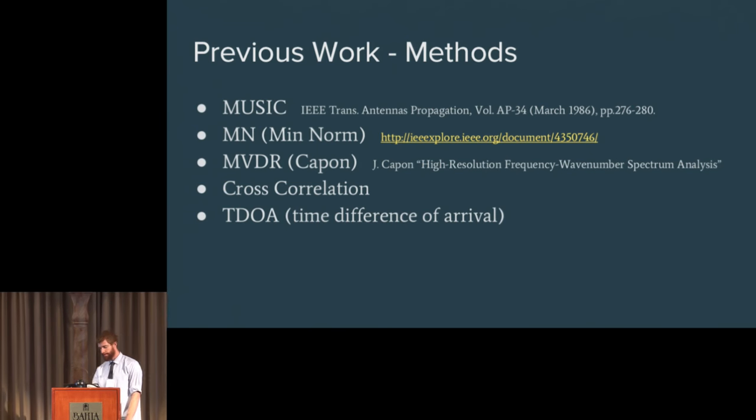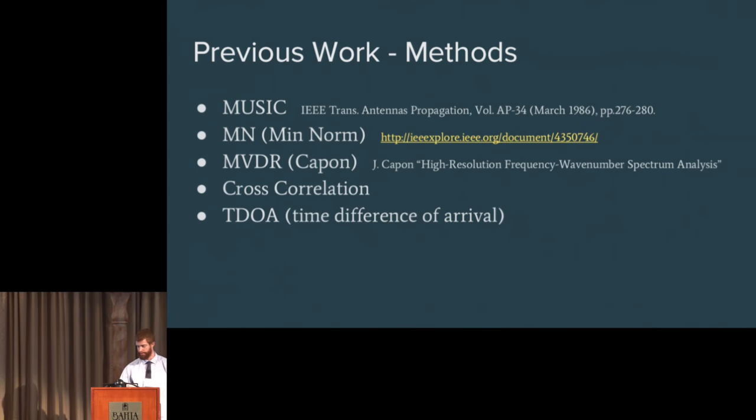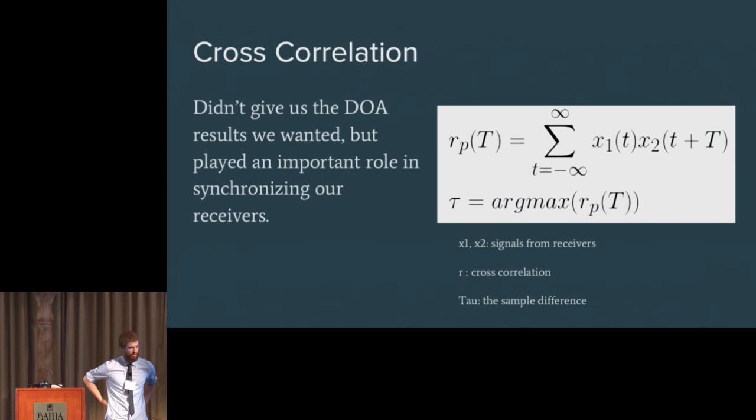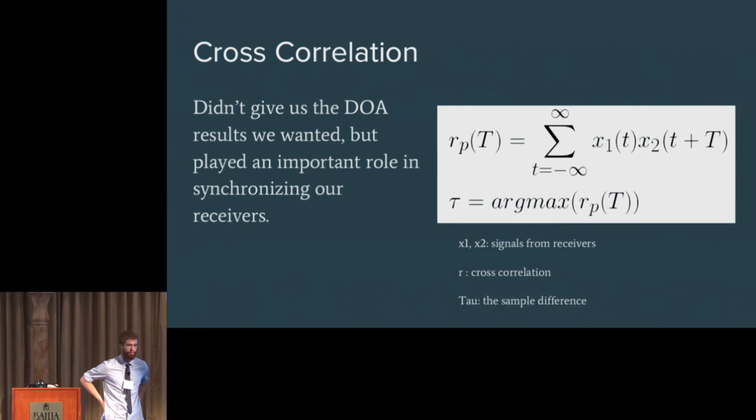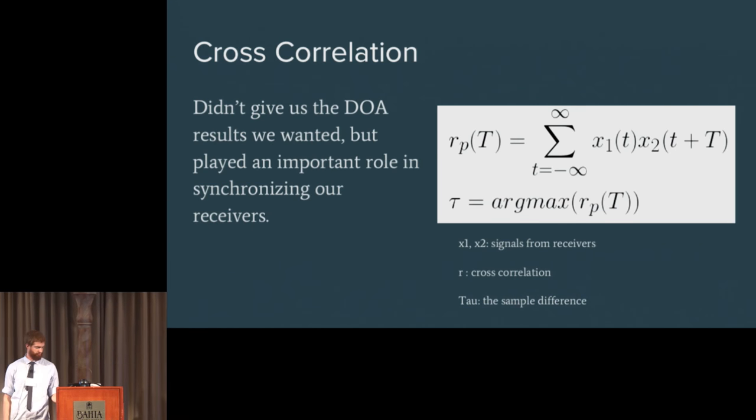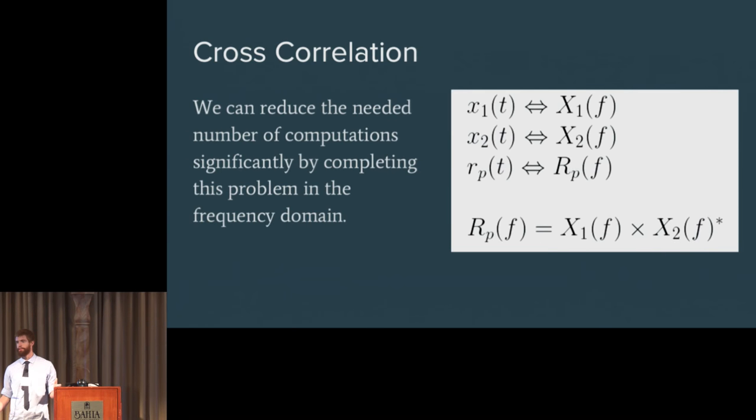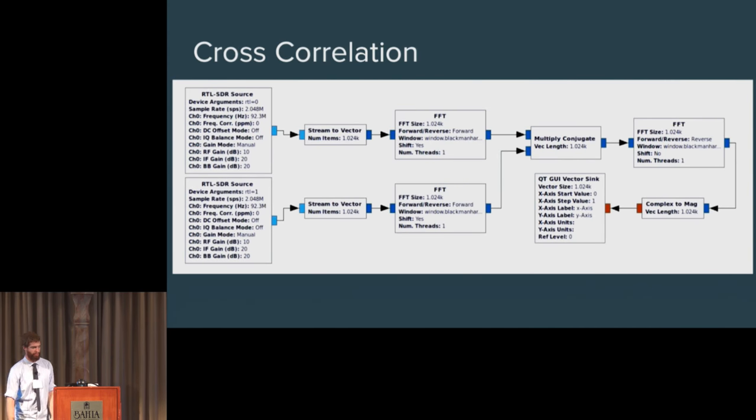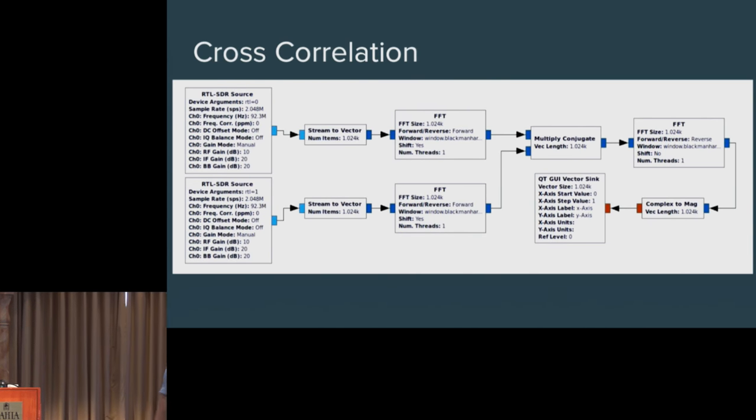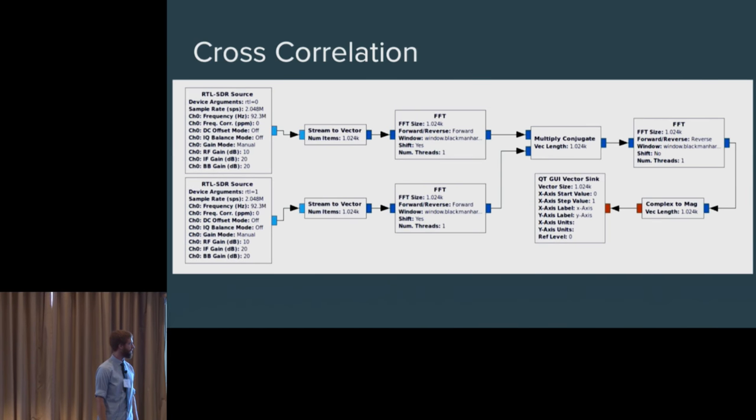This is where we started. We started with cross-correlation because we figured that was pretty easy to get our feet wet with. Cross-correlation didn't end up giving us the results we wanted, but it still proved to be important, so we're going to talk about it. Cross-correlation's pretty simple, right? It's basically convolution, and we can do it really efficiently in the frequency domain. This is easy to implement in GNU Radio, even just using the standard blocks here.